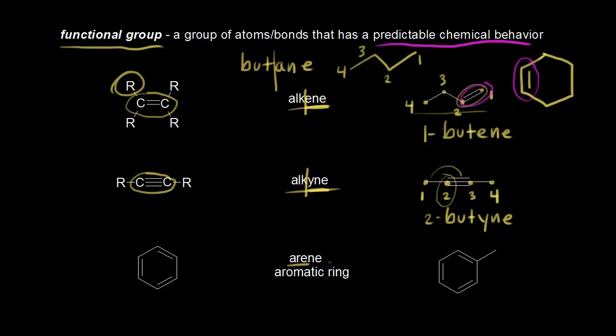Next, we're looking at an arene, also called an aromatic ring. You're looking for a six-carbon ring with alternating single double bonds, so a total of three double bonds. Now just because this has double bonds doesn't mean it's an alkene. Actually, arenes react in different ways from alkenes, and that's why this is a separate functional group.